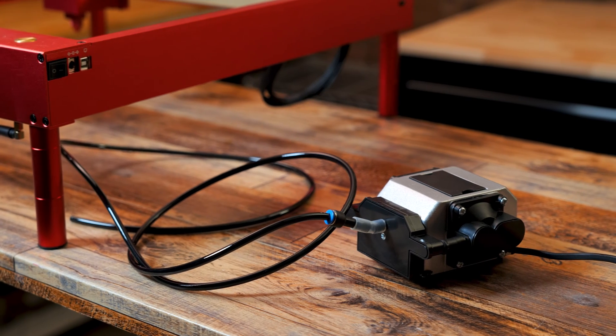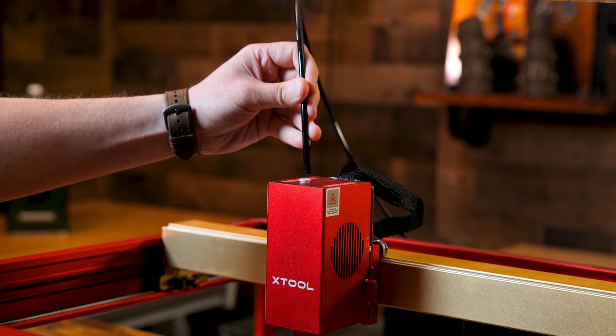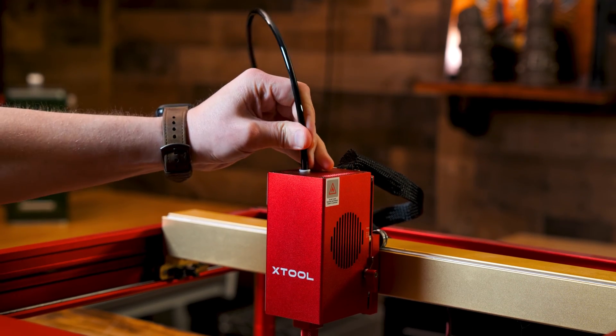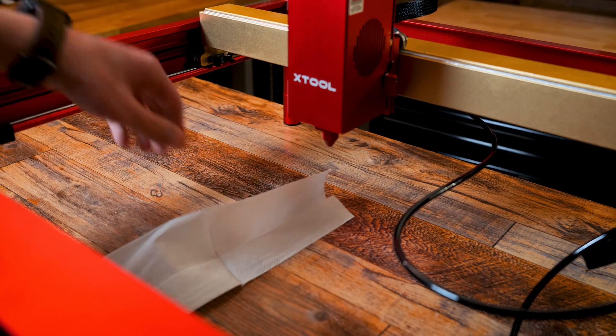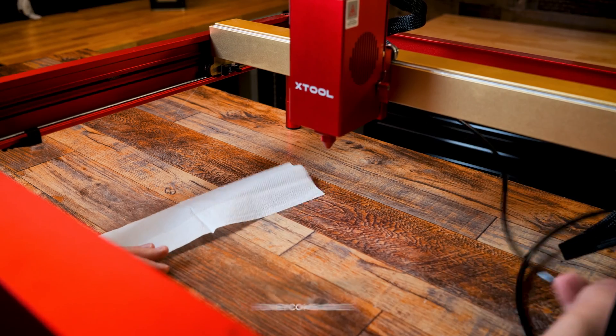And number five: using an air assist. And let me tell you guys, this is probably my favorite accessory. Using an air assist is a must in my opinion. This accessory works by blowing out smoke and small debris from the cutting area, which helps with cleaner cuts and engraving while making your project less prone to a fire.